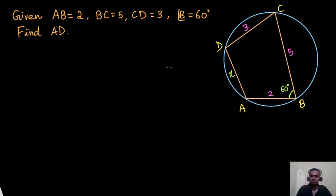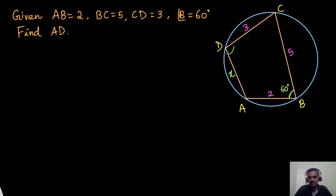When it comes to cyclic quadrilaterals, there is a unique and interesting property that some of you must already know: in a cyclic quadrilateral, the opposite angles are supplementary, which means the sum of any two opposite angles will always be 180 degrees. If I take angle B and angle D, these two are opposite angles, so their sum must be 180.